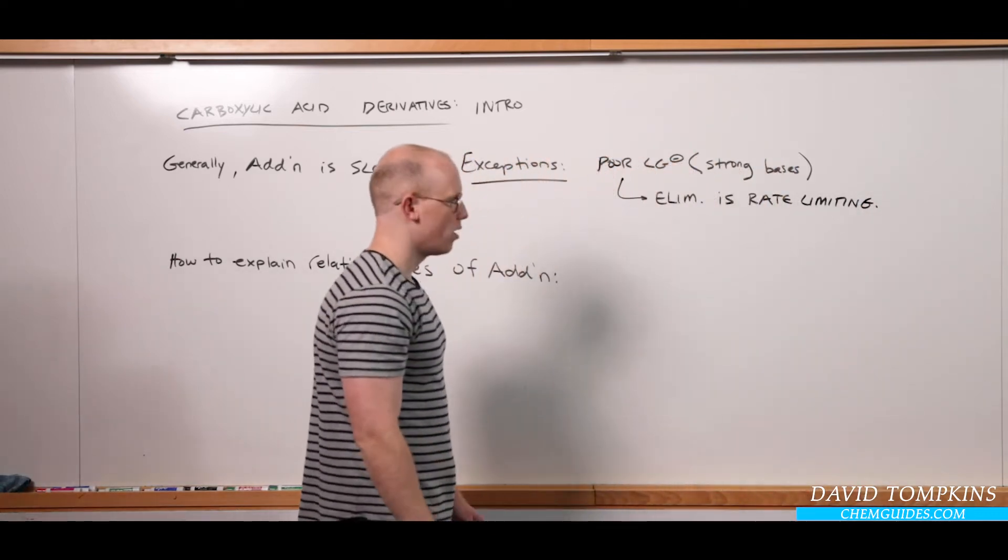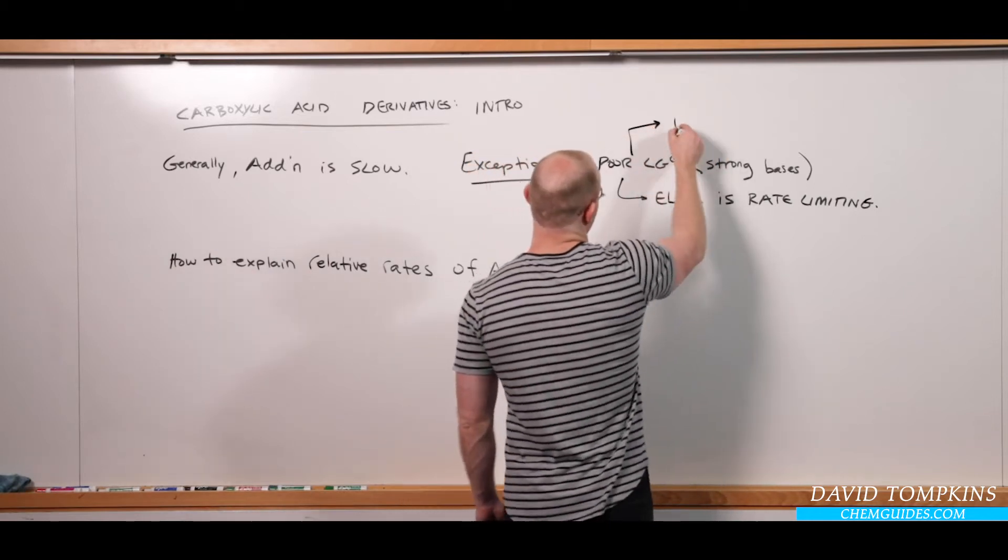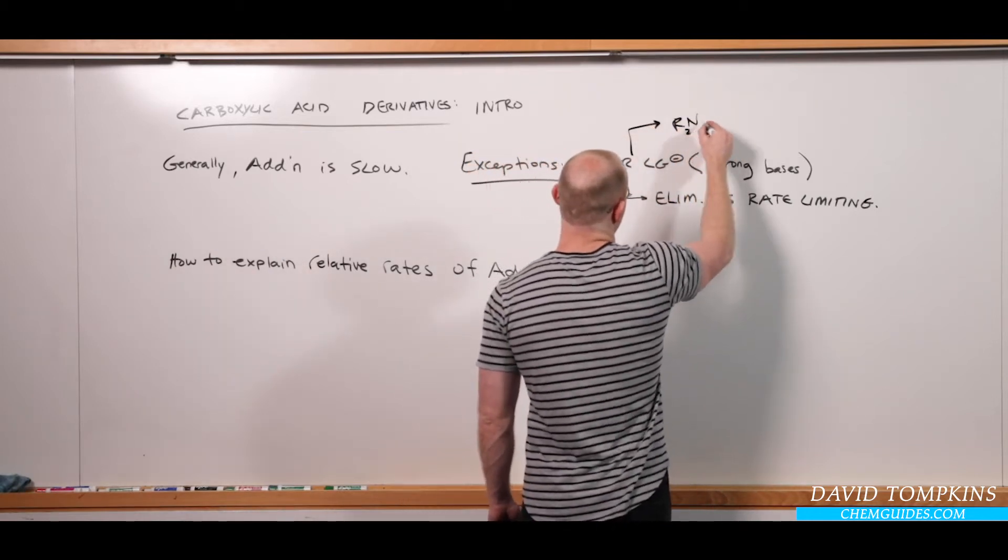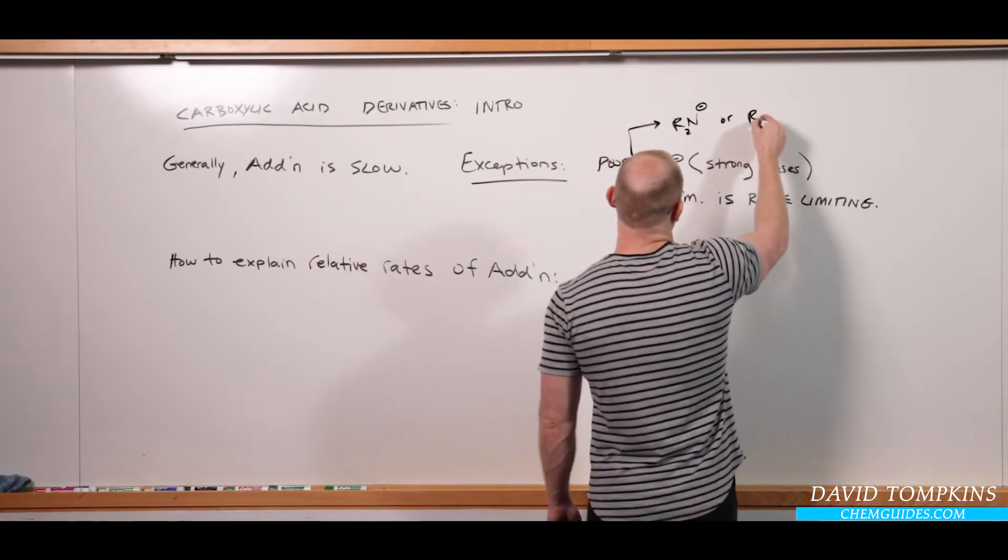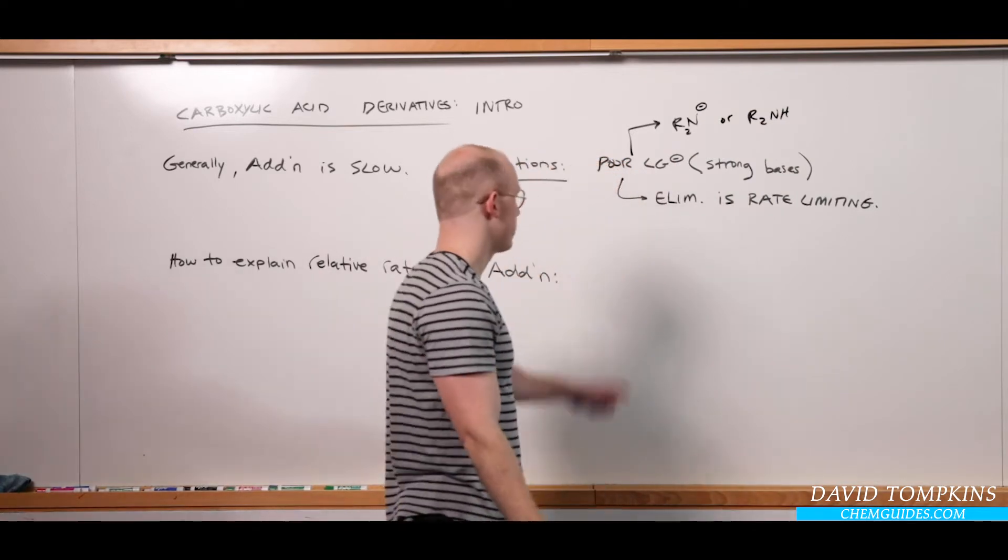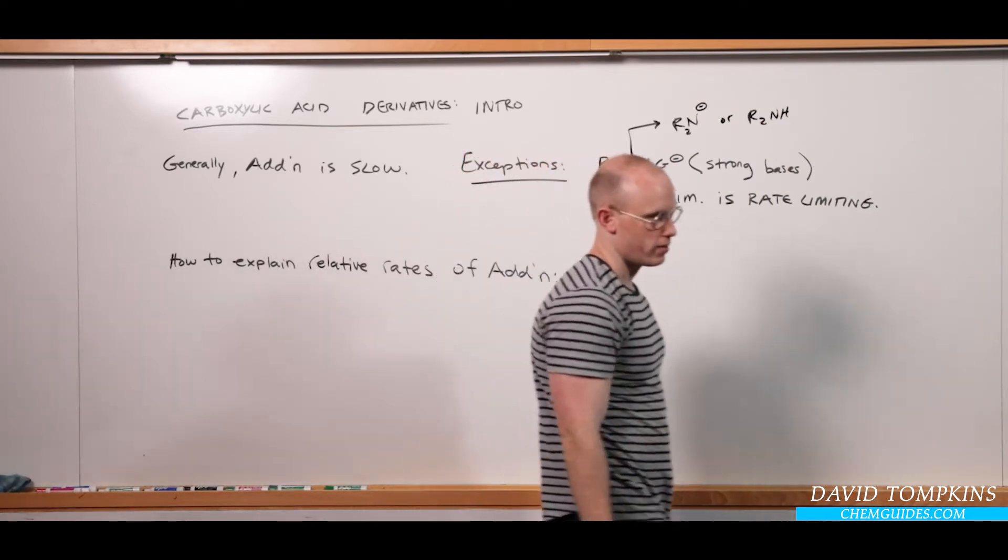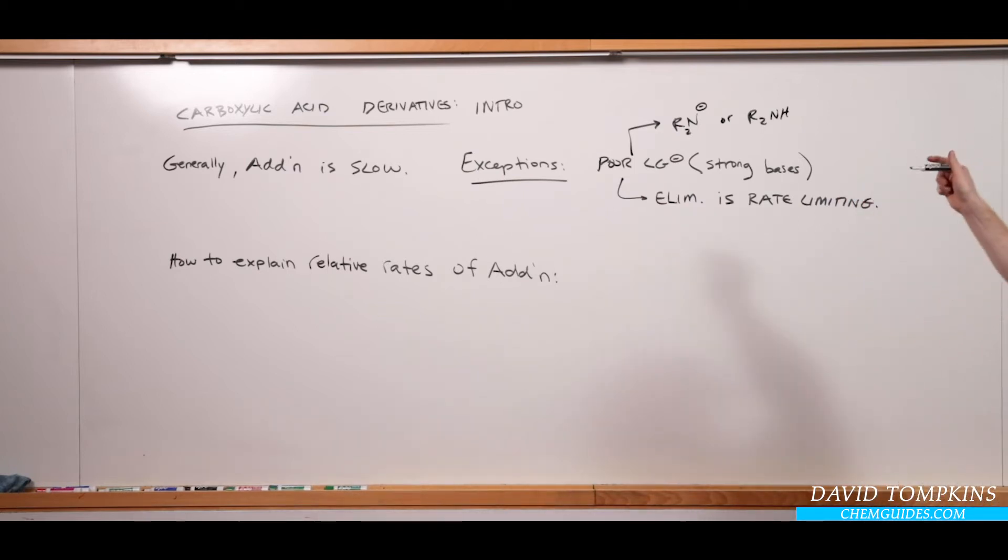The main example we will see later on with amide hydrolysis, those poor leaving groups are generally things where nitrogen has either a negative charge in basic solution or is a neutral amine in acidic solution. Those will leave quite slowly, and crossing that highest energy transition state will involve pushing out one of these strong bases.